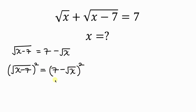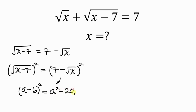There is something we need to keep in mind: the right-hand side is of the form (a minus b) squared. An expression like this can be expanded as a squared minus 2 times a times b plus b squared. In this case, our a is 7 and our b is the square root of x.